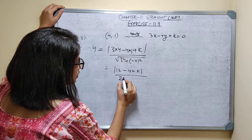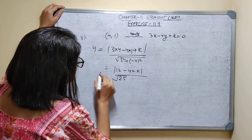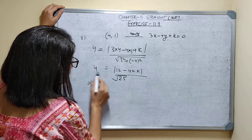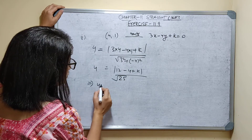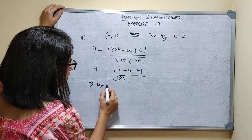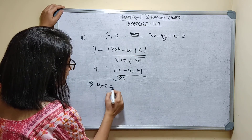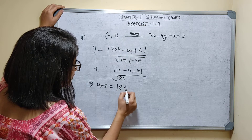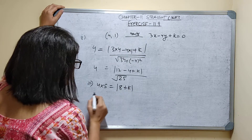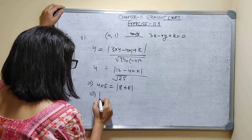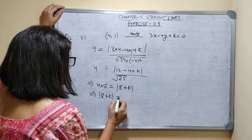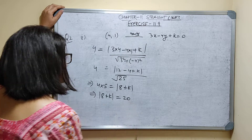Root of 25 is equal to 5. So 4 into root 25 — that is 5 — is equal to 12 minus 4, which is 8, so 8 plus k. Therefore mod of 8 plus k is equal to 20.